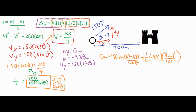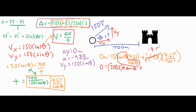Since everything is t squared, we square 4.67 over cosine theta. To simplify, sine over cosine becomes tangent of theta. Multiplying 4.67 times 150 gives 700.5. Taking one-half times negative 9.8 gives negative 4.9, and multiplying by 4.67 squared gives negative 106.86.